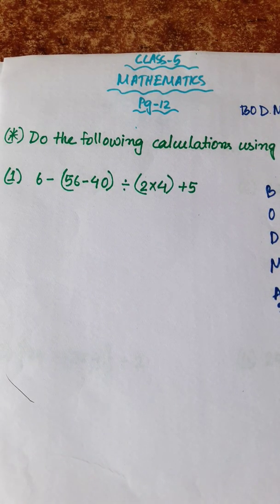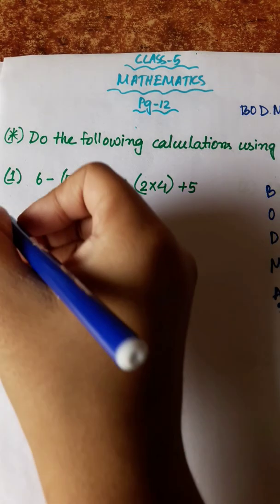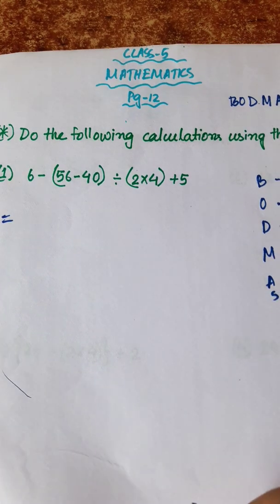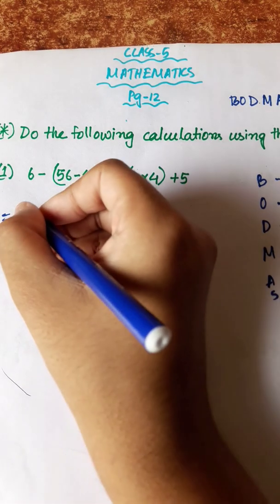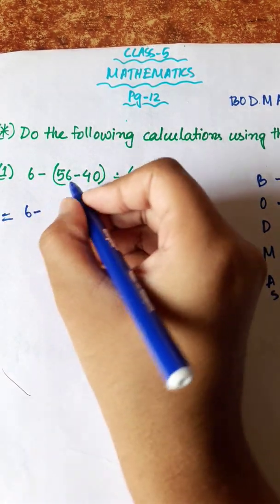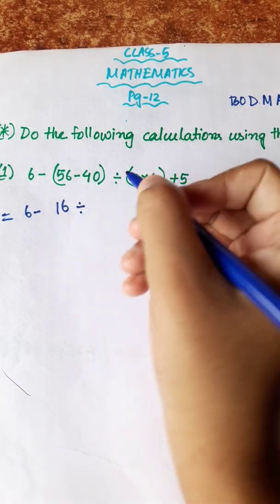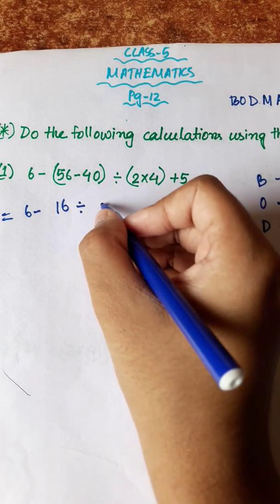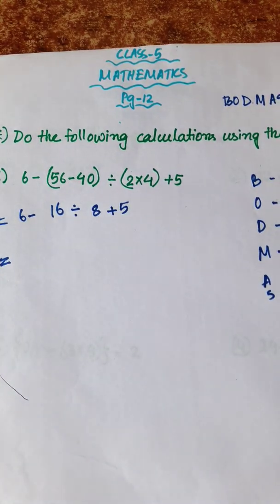Number 1: 6 minus, first bracket 56 minus 40, bracket closed, divided by, first bracket 2 into 4, bracket closed, plus 5. According to BODMAS rule, we have a bracket first. So bracket: 56 minus 40 is 16. Divided by bracket: 2 into 4 is 8, plus 5.